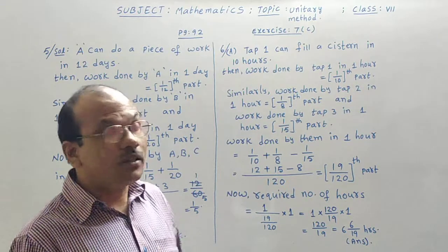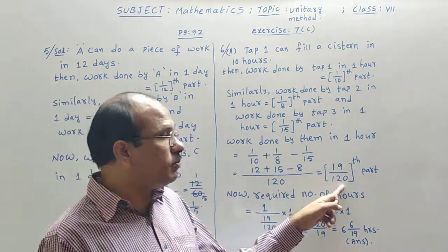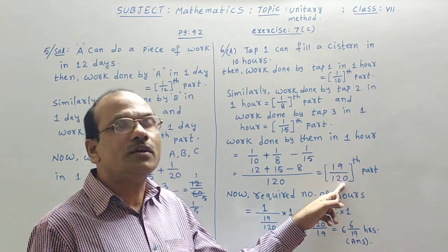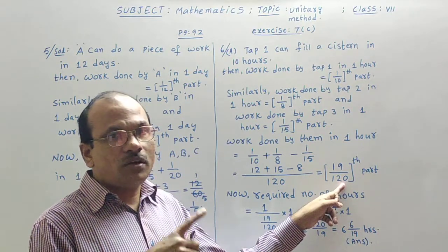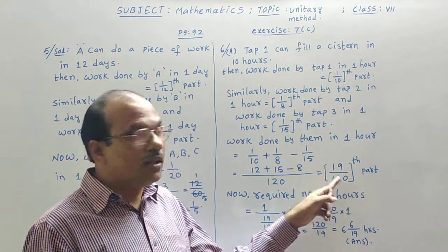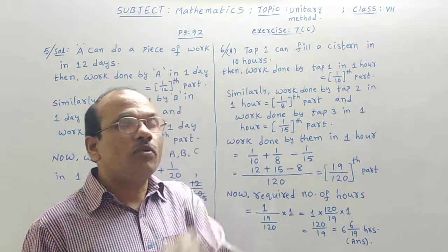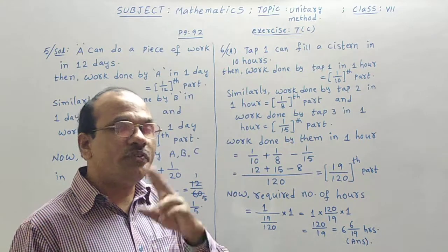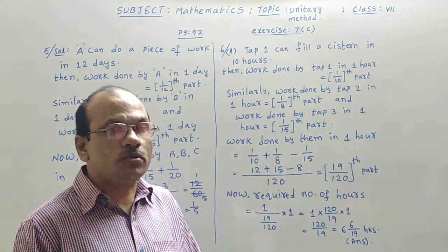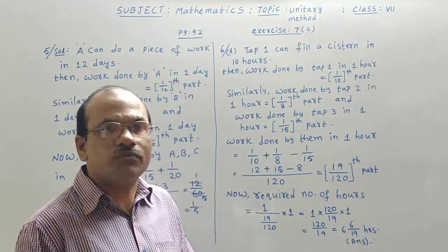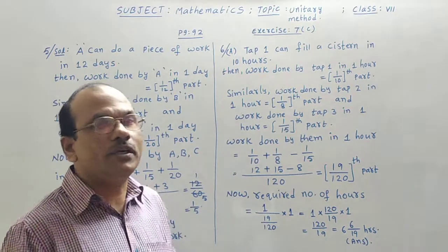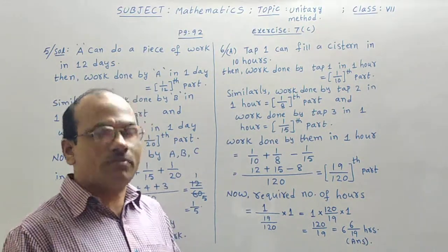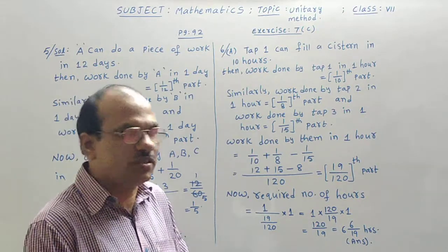19 by 120th part of that system will be filled by the three taps in one hour of time. Then, one whole tank will be filled by the three taps in some number of hours of time. That we have to identify. That means more time is required or less quantity of time is required is the more important.